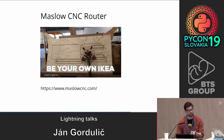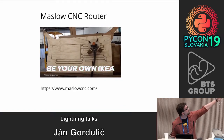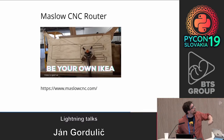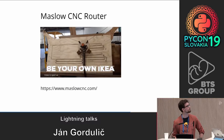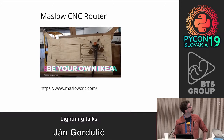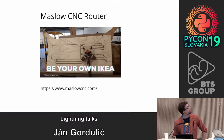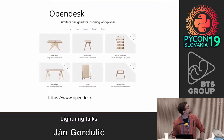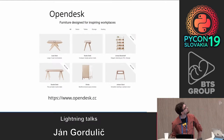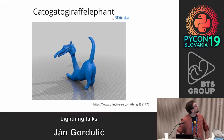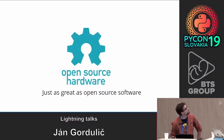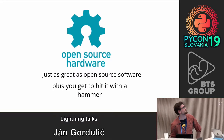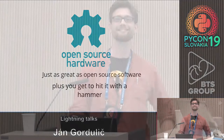I like this one - it's a CNC router. So you can be like your own IKEA, and you can build it with a fraction of the price of a regular CNC router. And you can just make your own furniture. You can even download the furniture from the internet. Or you can make whatever the hell you want. So thank you. Open source hardware is just as great, but you can have it with a hammer.